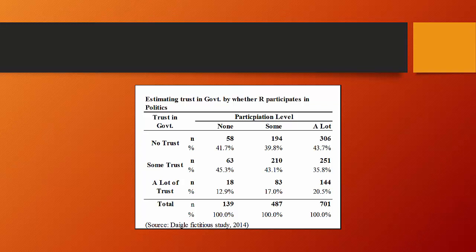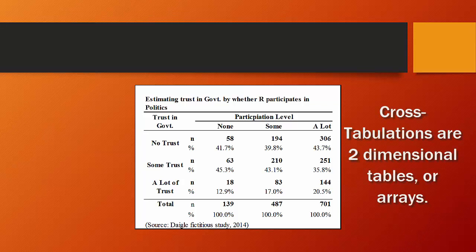In univariate analysis, you created a vector or one dimension of the values for the one variable that you are interested in. In cross tabulation, we establish an array or a two dimensional display of how the values of the two variables interact with one another.